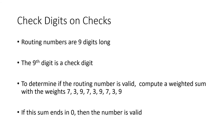The routing number also uses check digits. A routing number is nine digits long, and the ninth digit is a check digit. We validate a routing number using a weighted sum, and this time the weight pattern is 7, 3, 9, 7, 3, 9, 7, 3, 9. That means we take the first digit and multiply by 7, the second by 3, the third by 9, and so on. We add all those products up, and the total should end in 0. If it ends in 0, the number is valid.